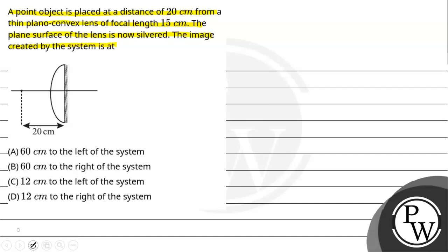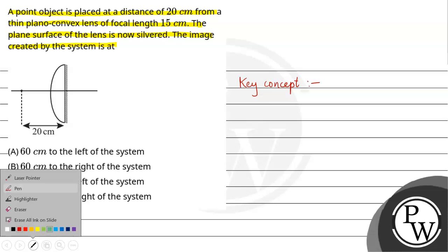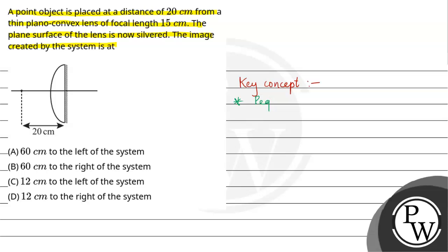Here the key concept is equivalent power. In this case, let us know that equivalent power, that is P_eq. First of all, how does it happen? See, note that plano-convex lens.